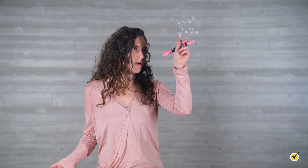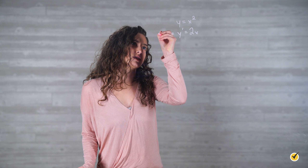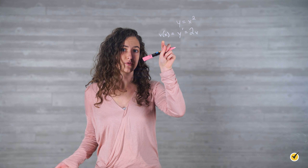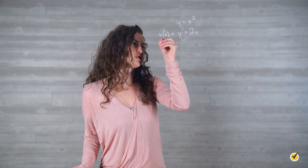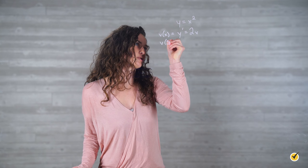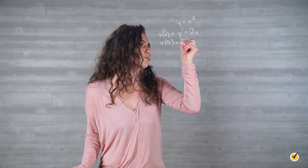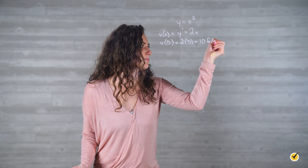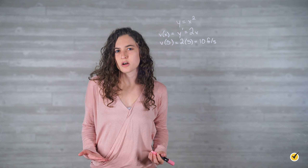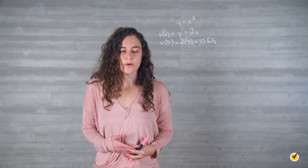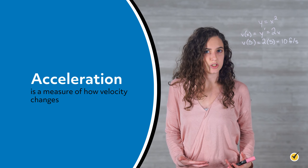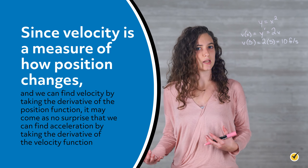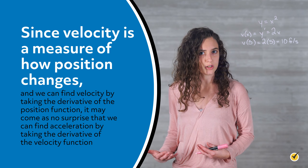Once you have taken the derivative to acquire the object's velocity function, you can plug in any x value or time value to get the value of the velocity at that exact moment. For example, we can find the velocity of the tire after 5 seconds by plugging in 5 for x. We can write the velocity function as v of x. So v of 5 is equal to 2 times 5, which is equal to 10 feet per second.